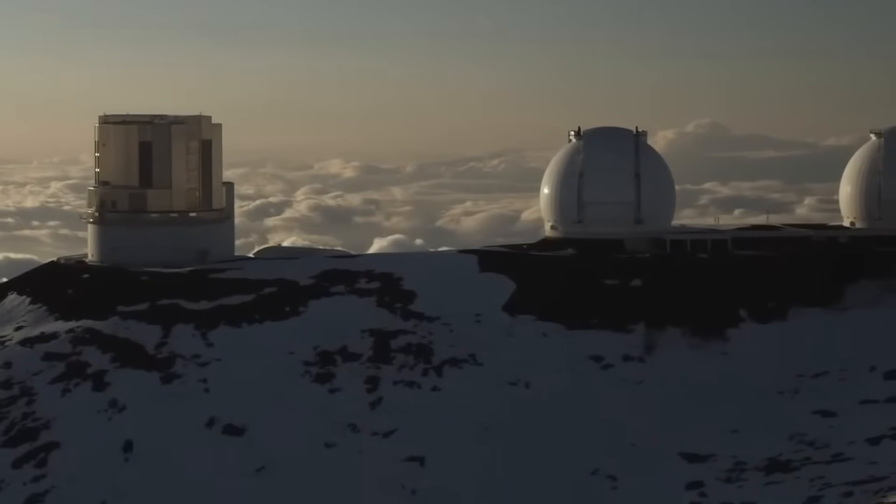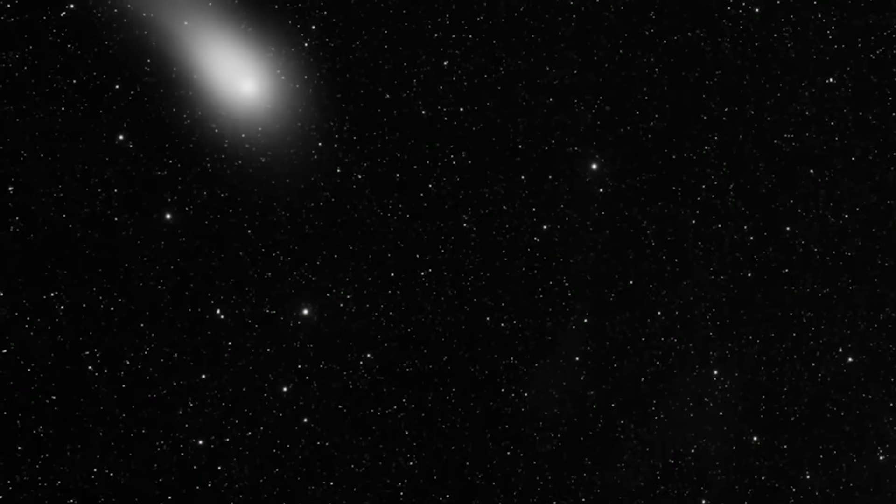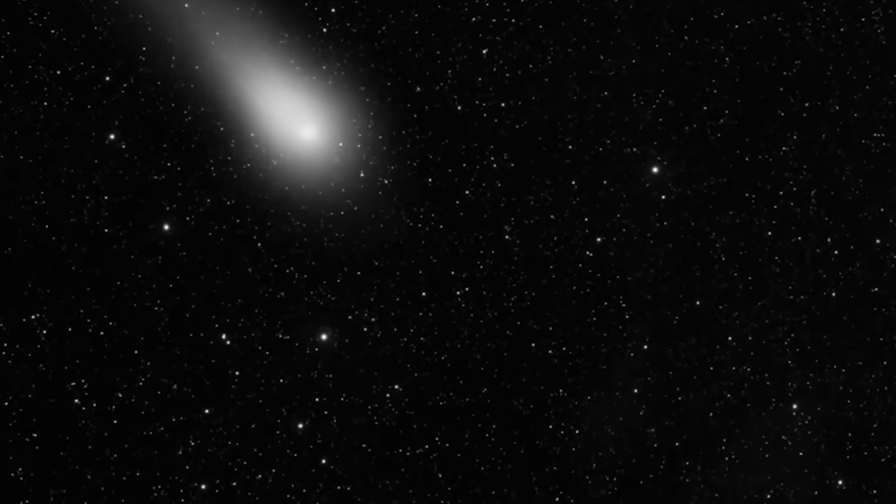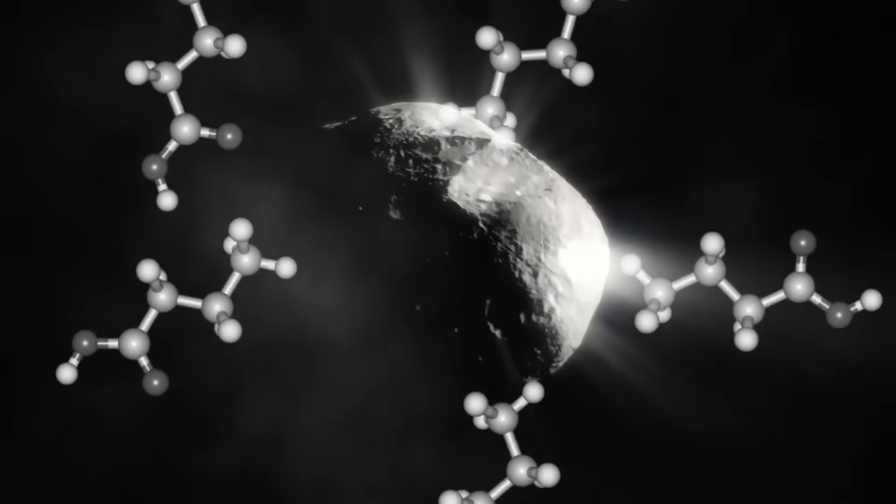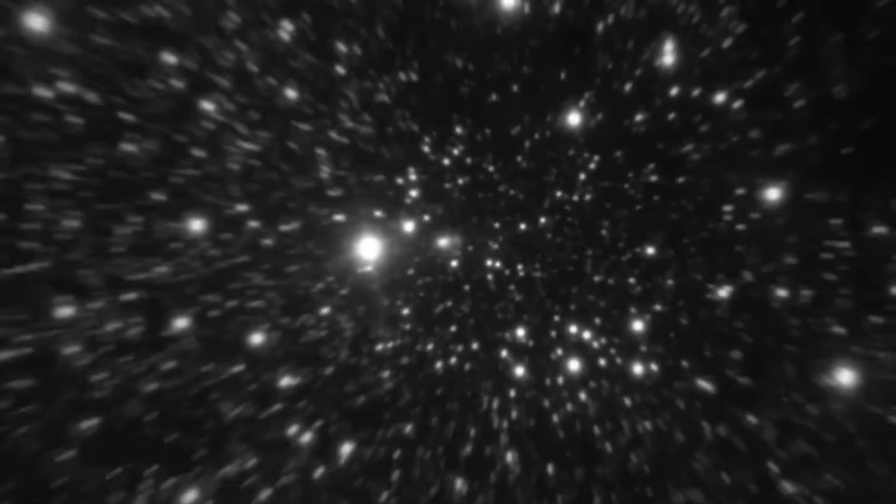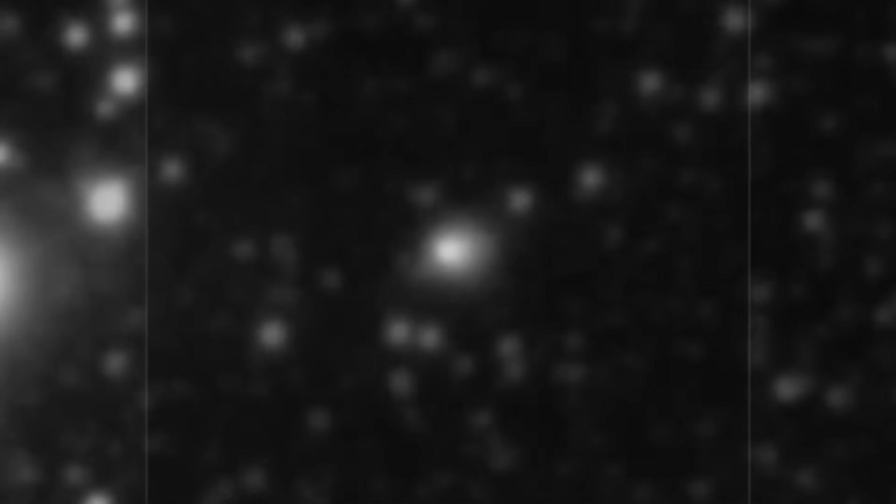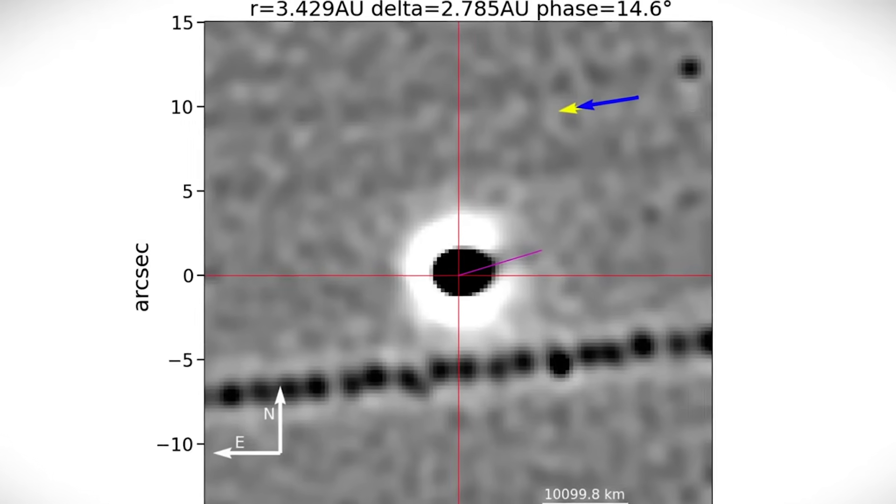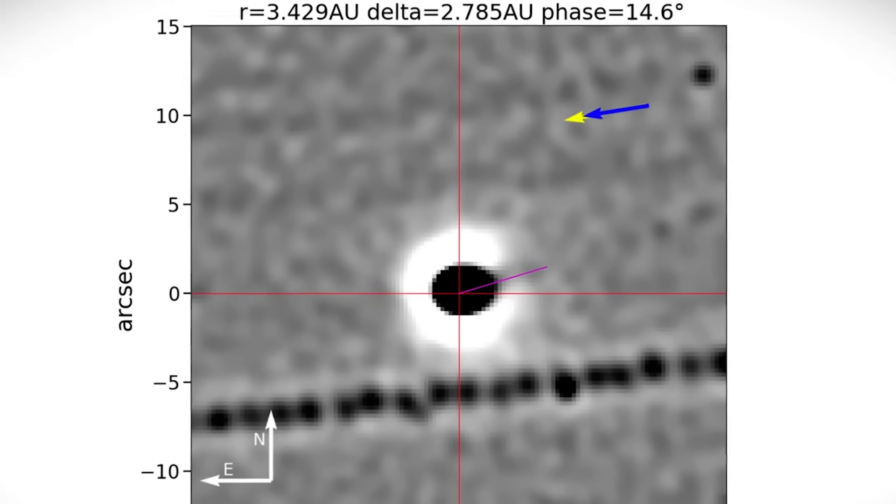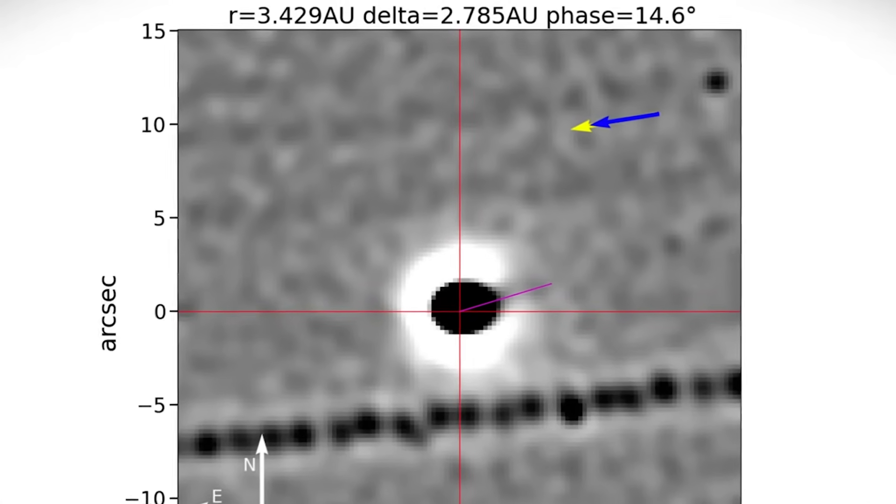3I/ATLAS was detected early thanks to ATLAS's wide field survey telescopes designed to spot near-Earth objects. Their sensitivity provided months of notice, allowing global coordination among observatories. This early warning gives humanity a rare chance to study a cosmic traveler up close.